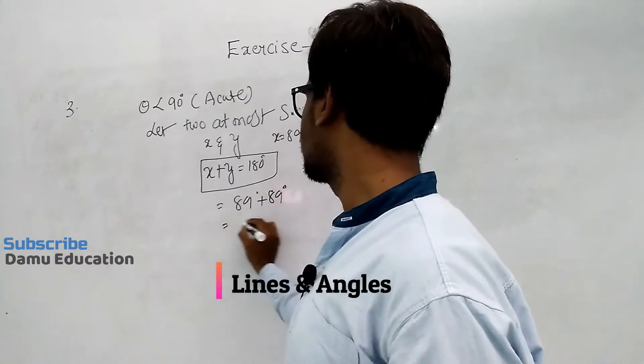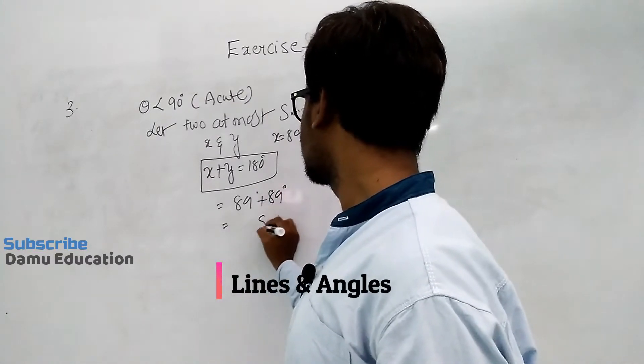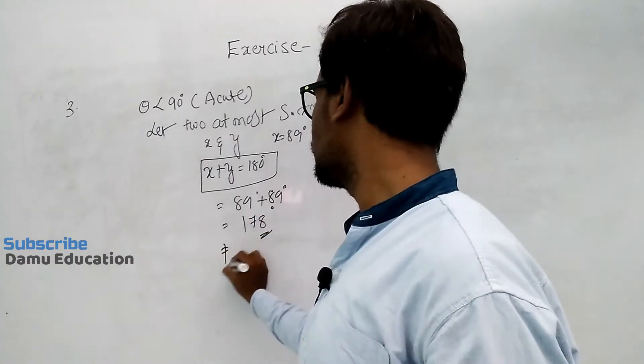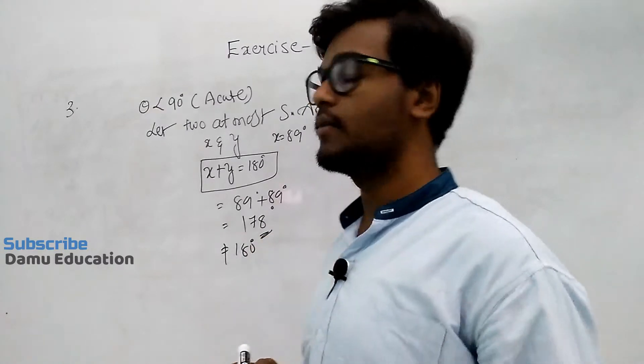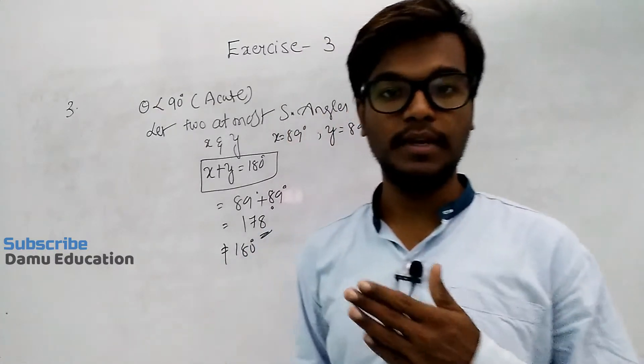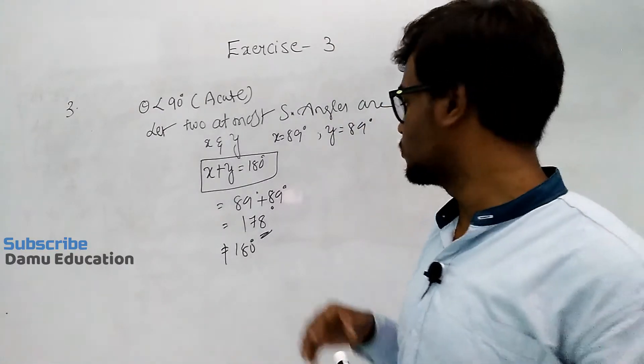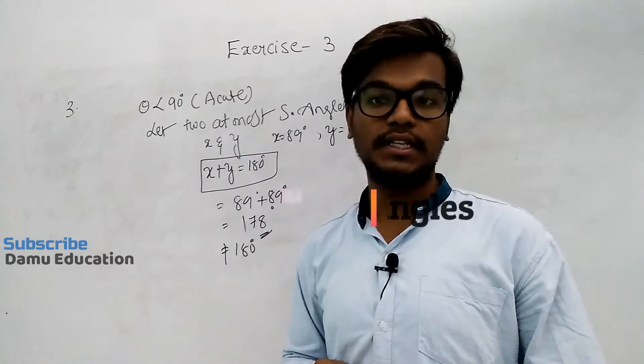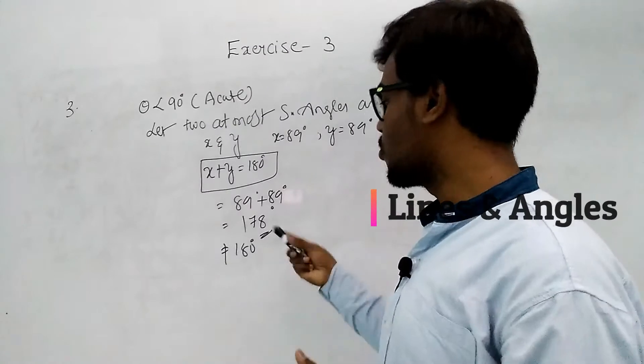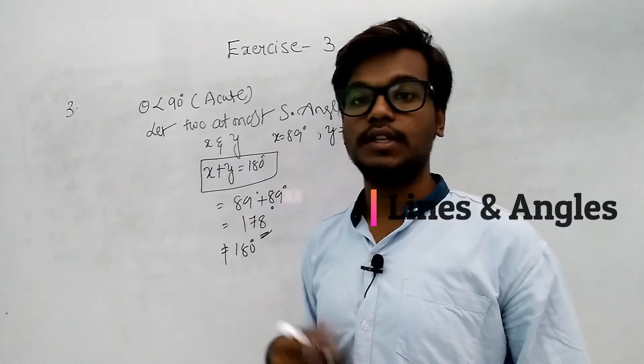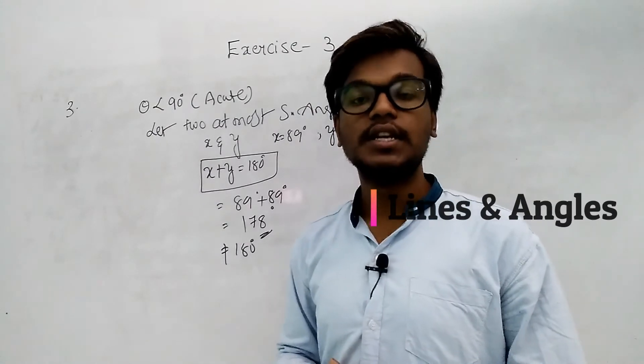We get 178 degrees. This is not equal to 180 degrees. Even at most, two acute angles do not form 180 degrees. We got only 178, which is less than 180 degrees. Our final decision is that acute angles cannot form supplementary pairs of angles.